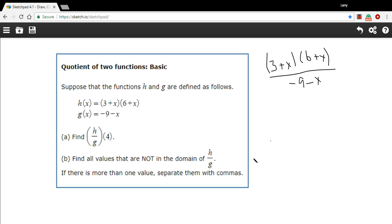So the value, let's do the second part first. So the value that's not in the domain of this function is where the bottom, negative 9 minus x, equals 0. So to find this value that's not in the domain, you set the bottom equal to 0 and then you just solve it for x.